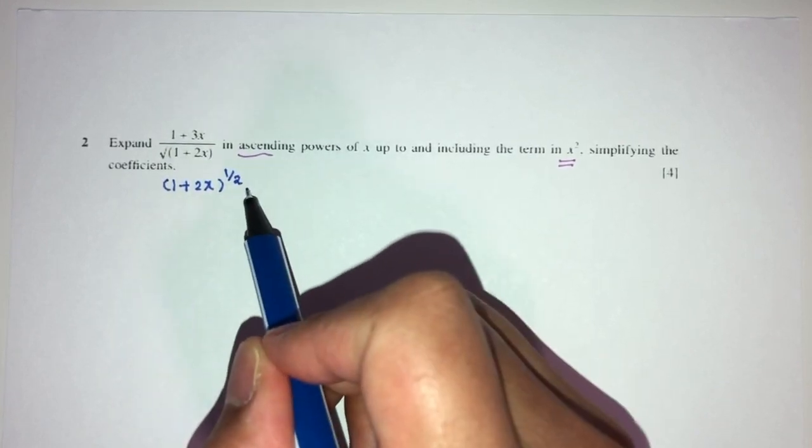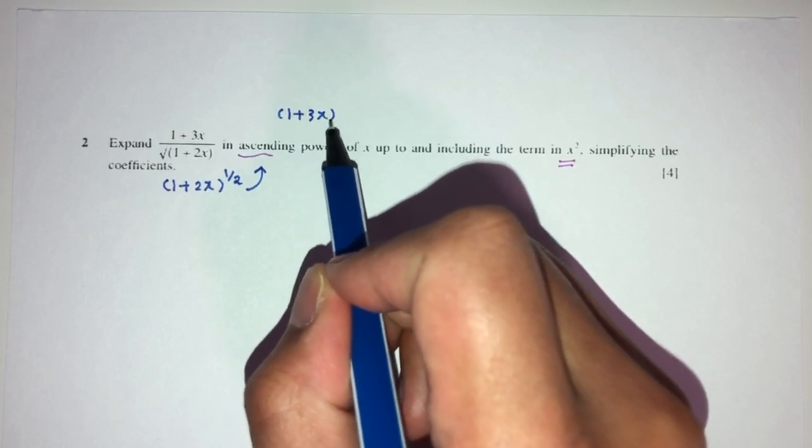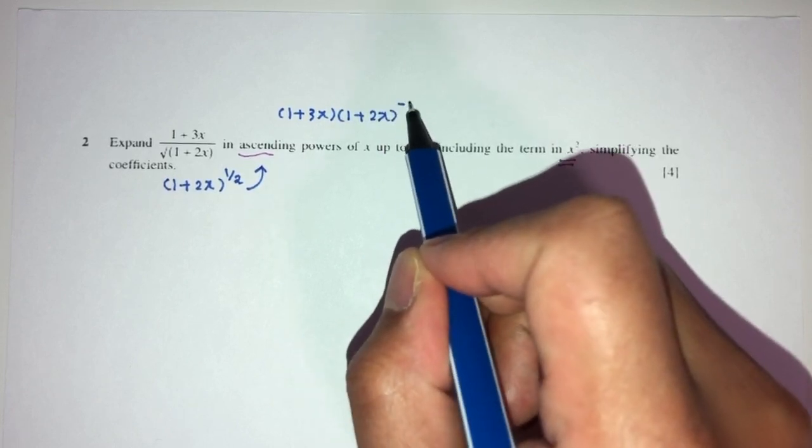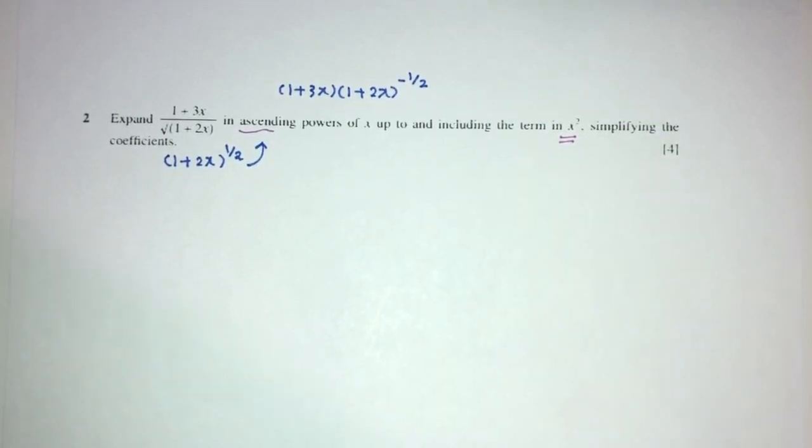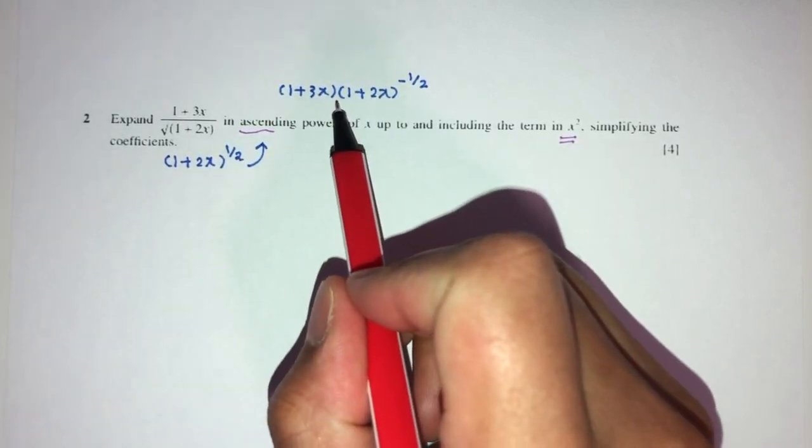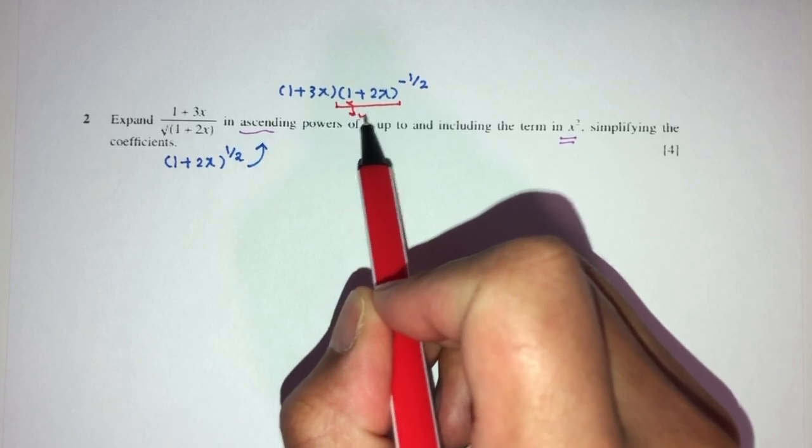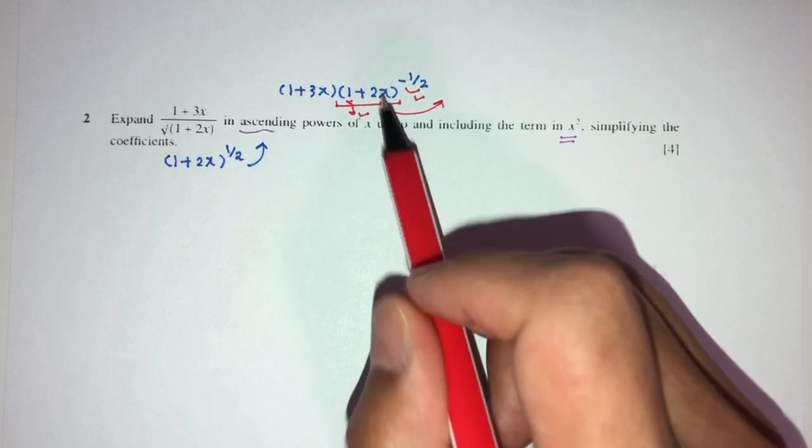Now, I can send this up. You will have 1 plus 3x multiplied by, instead of divide, that will be plus 2x minus half. Now, obviously, I will have to expand this by using our binomial formula. This has to be plus 1, check. It is plus 1, good to go. And this is negative or fraction, good to go. So we can use our formula to expand this one.